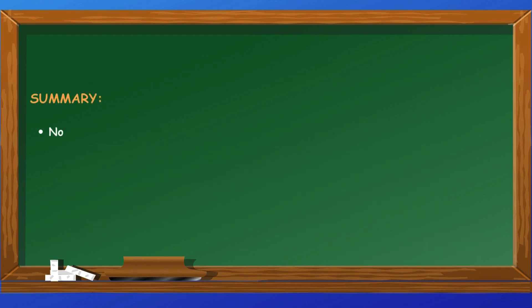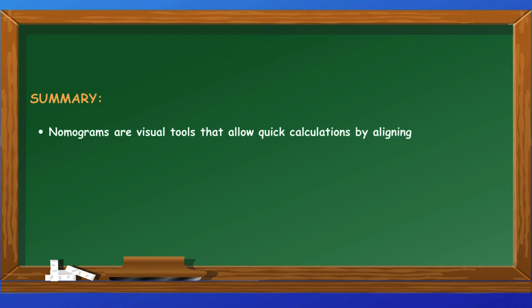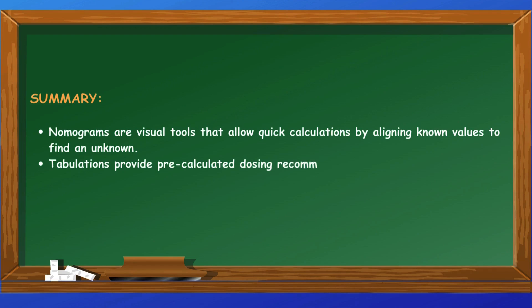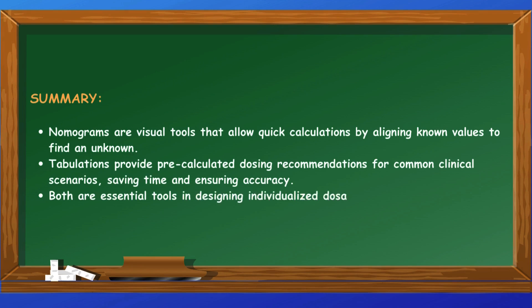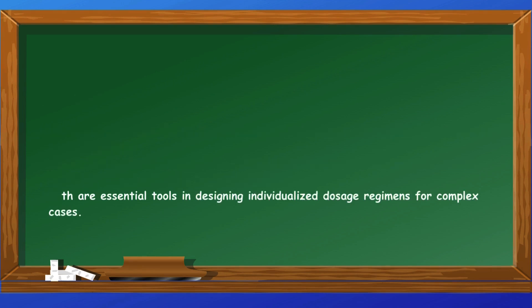In summary: nomograms are visual tools that allow quick calculations by aligning known values to find an unknown. Tabulations provide pre-calculated dosing recommendations for common clinical scenarios, saving time and ensuring accuracy. Both are essential tools in designing individualized dosage regimens for complex cases.